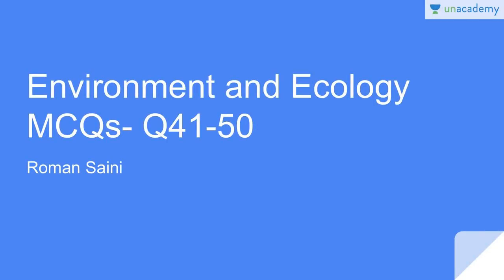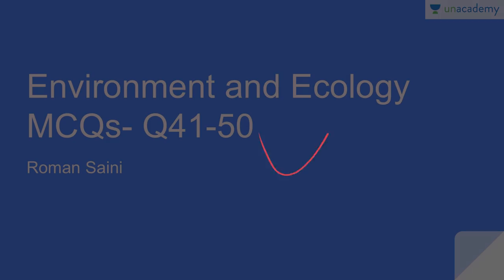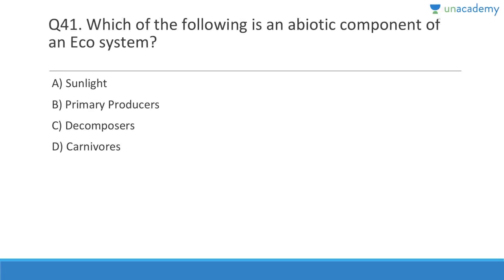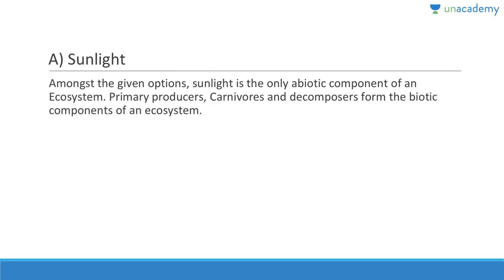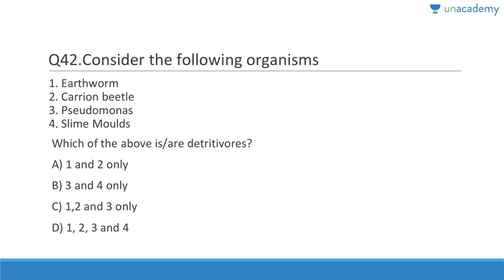Let us discuss questions 41 to 50. Question forty-one: Which of the following is an abiotic component of an ecosystem? Primary producer, decomposer, and carnivore are all living, but sunlight is not living. So sunlight is the abiotic component. Question forty-two: Which of the following are detritivores — earthworm, carrion beetle, Pseudomonas, slime molds? Earthworm and carrion beetle are detritivores, but Pseudomonas are bacteria so they are decomposers, not detritivores.